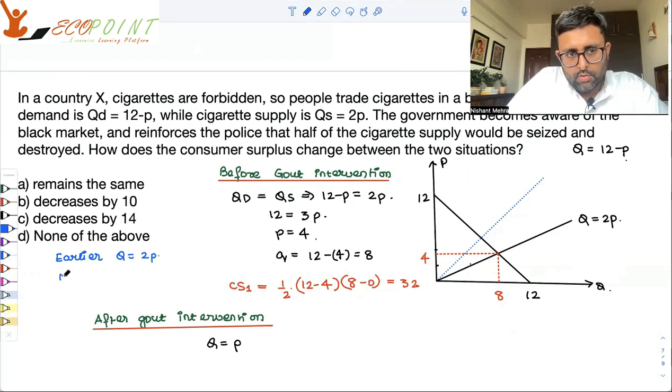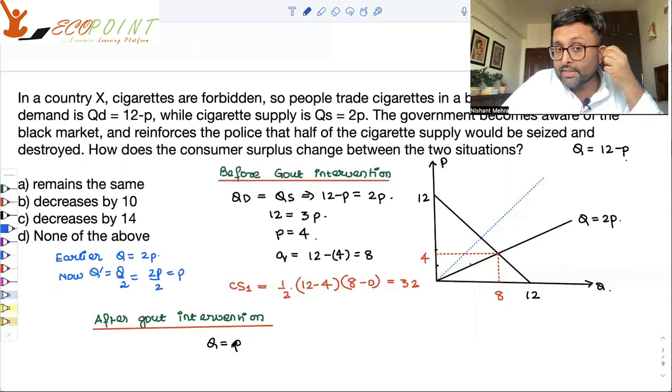Now half of the Q is going to be destroyed. So this is new Q. This is new Q, so this is what my supply function is. Demand function is the same only.